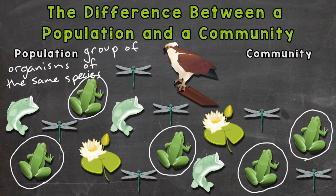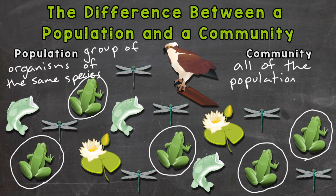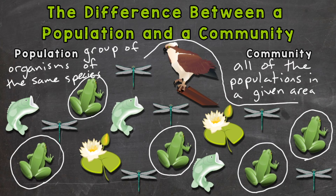Now next, a community is all of the populations of different species in the same area — so all of the biotic, or living, things in that given area. The community would be all of the biotic factors within that pond area, so I'll put a circle around our pond community here.